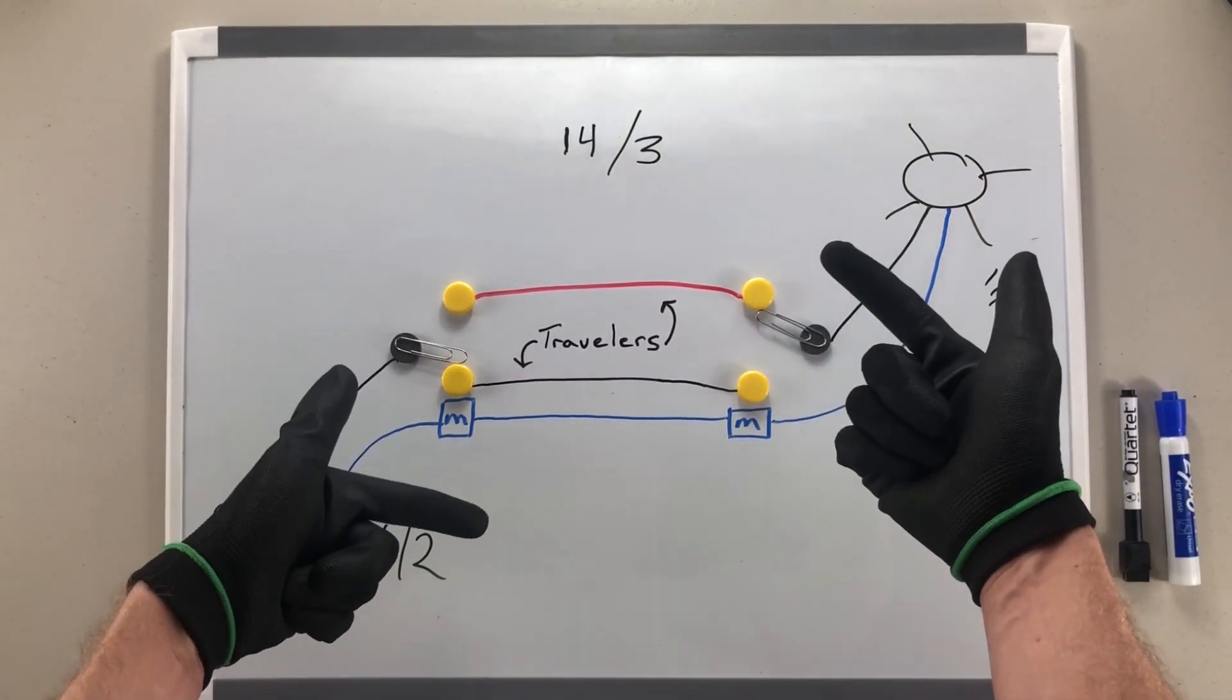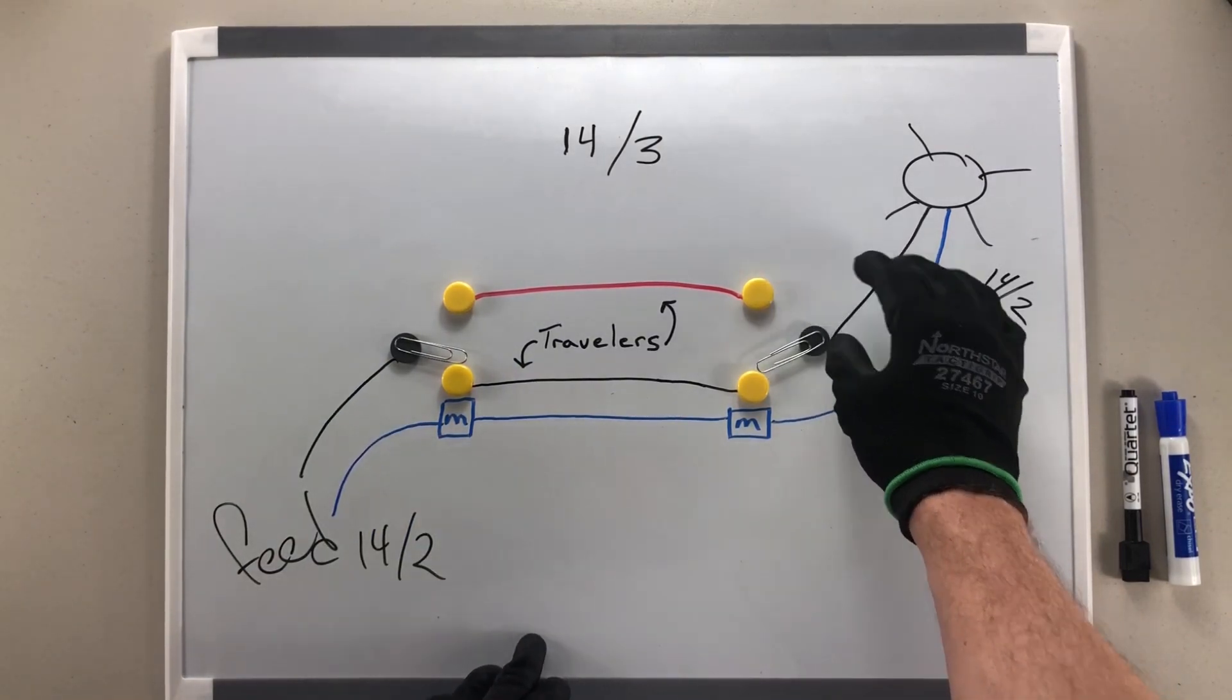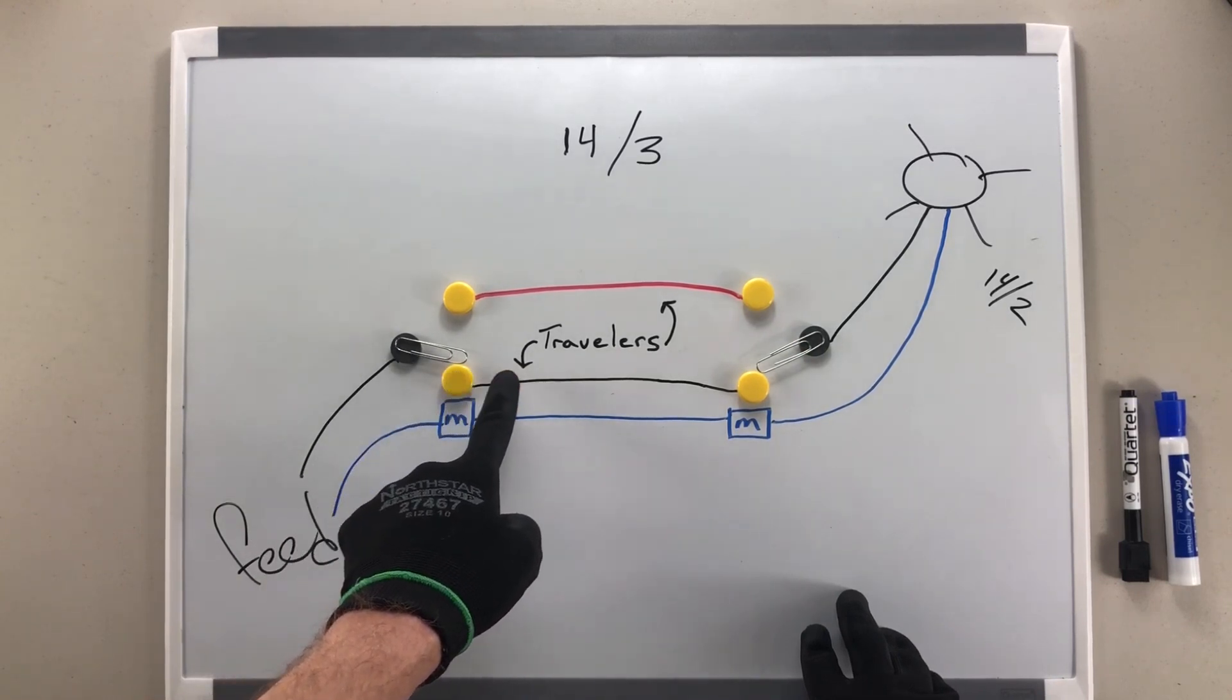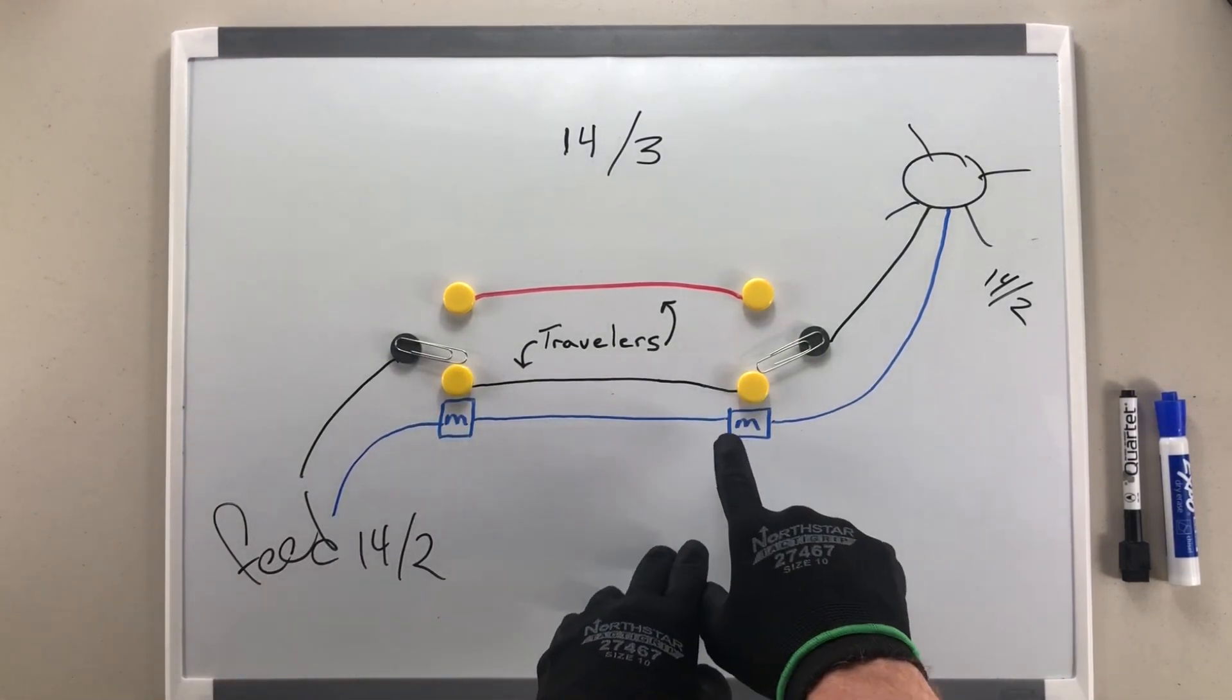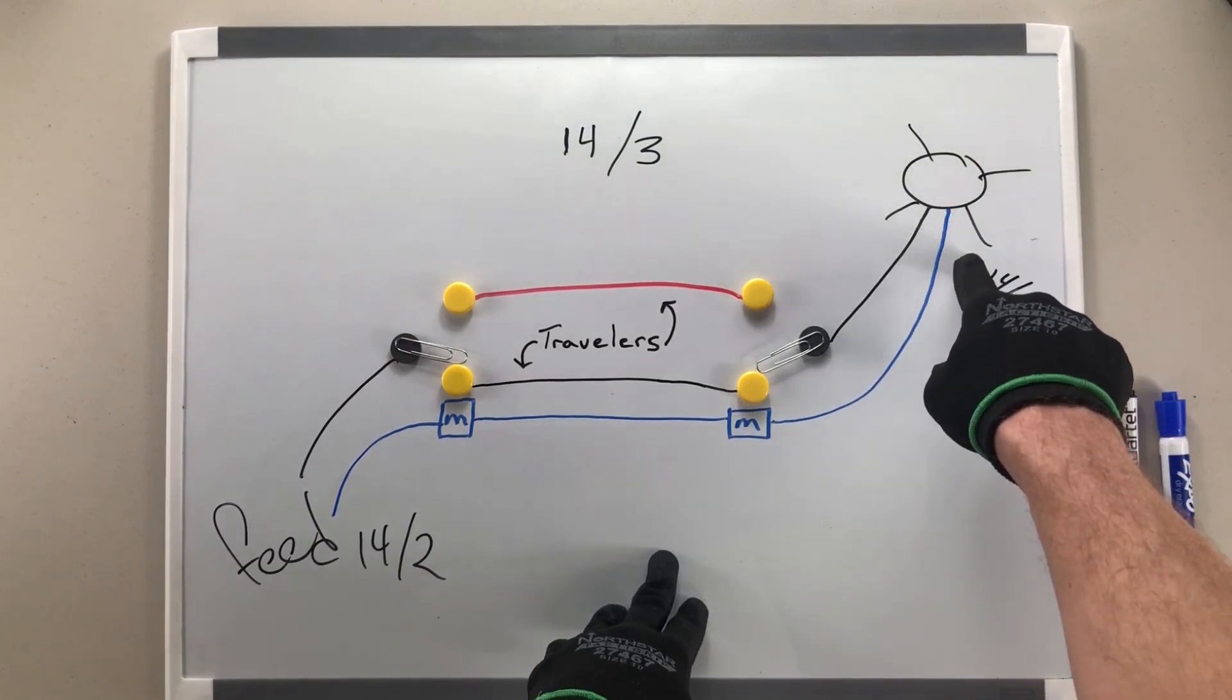Now, anytime we hit any one of these switches, we'll change the condition again, allowing power to come across our feed, up through our common screw, to our traveler terminal, across through our other traveler terminal, up through our knife blade and our common screw, and turn our light on again.